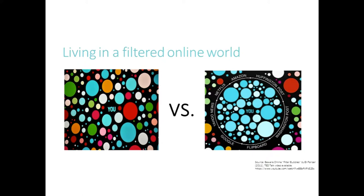In some ways this is quite nice because it's very personalized and tailored to your interests. However, you don't always know or even see that this is happening. You can't know what results are being filtered out — what you're not seeing that maybe you should be. Are you only seeing things that agree with your viewpoint or beliefs? Or are you seeing things that are contrary and make you think, or maybe feel a little uncomfortable? It's quite easy when you're in a filter bubble to believe that what you see is an accurate representation of the world, and that everyone else sees the same thing.